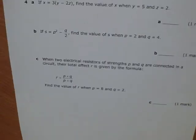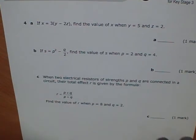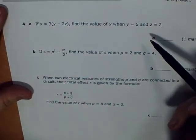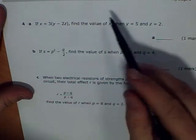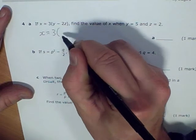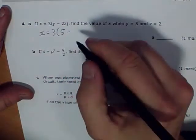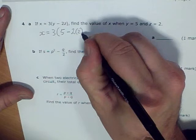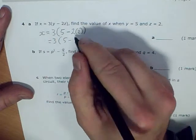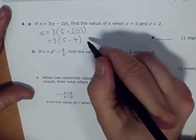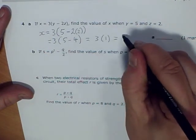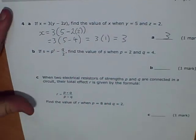And lastly, we've got a few questions on substitution. If x equals 3y minus 2z, find the value of x when y equals 5 and z equals 2. I'm just going to put in these values. I've got x equals 3 times by 5 minus 2 times by 2, which is 3 times by 5 minus 4, which is 3 times by 1, which equals 3.